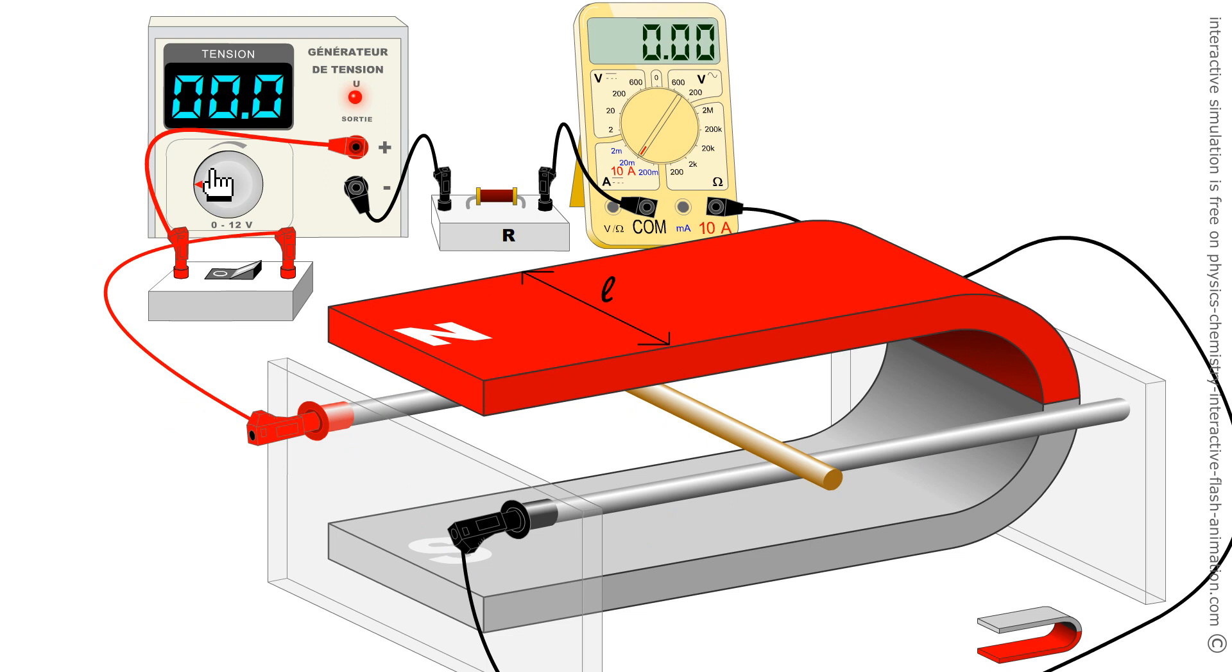If I put a little voltage here so that the movement is not too fast, you will have time to see the mobile conductor move. I close the circuit. A force was exerted on the conductive element, directed to the right. I would like to convince you that the direction of the current is important.